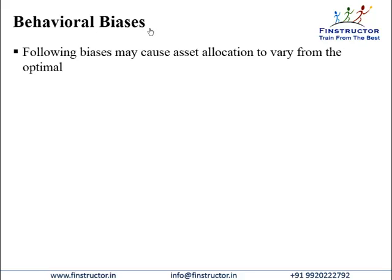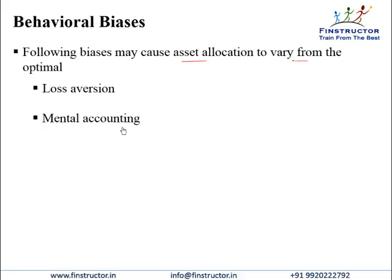We must not forget the many behavioral biases that individuals suffer from, which can cause asset allocation to vary from the optimal. Loss aversion is the reluctance of the investor to accept a loss — if he needs to sell something, he will first sell investments in which he has had a profit. The bias of loss aversion can cause concentrations in the portfolio, particularly in loss-making or extra-risky assets the investor is unwilling to sell. Mental accounting makes us split our portfolio into layers, each managed separately to meet a particular goal, with correlation between layers ignored — again resulting in suboptimal asset allocations.